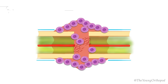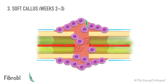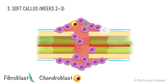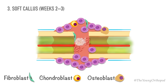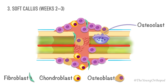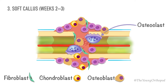Depending on the local biological and biomechanical environment, the stem cells differentiate into fibroblasts, chondroblasts, and osteoblasts. Simultaneously, osteoclasts start clearing up the dead bone.